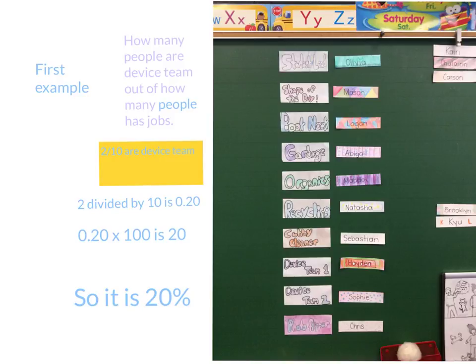So this is how you get the decimal. Two divided by ten — you have to divide the number you have by the fraction, which gives you the decimal. So two divided by ten is 0.20, and 0.20 times 100 is 20. So it's 20%. Let's go to the next example.